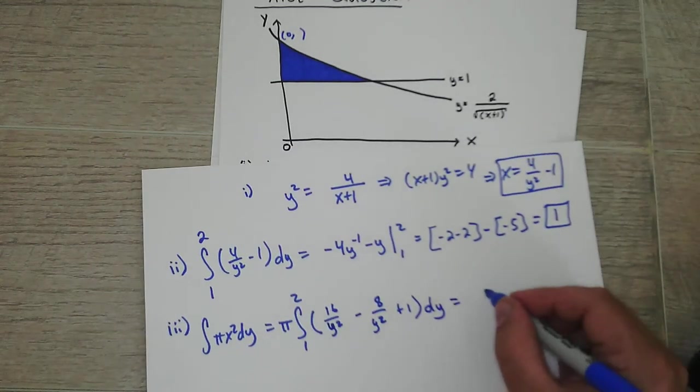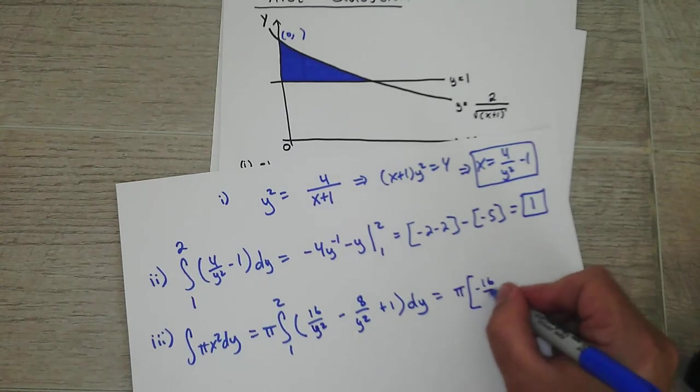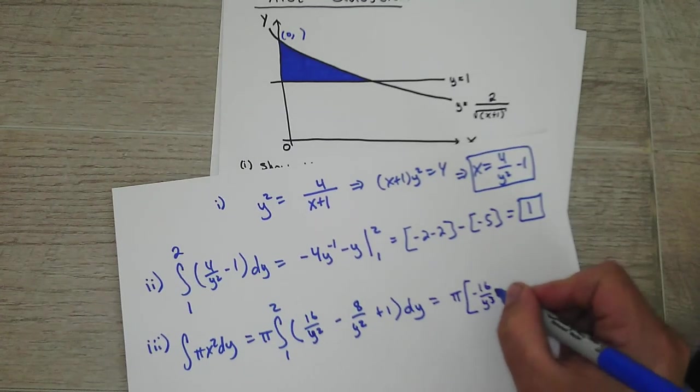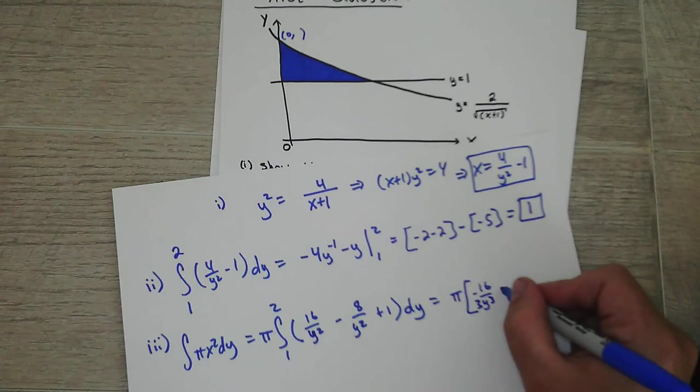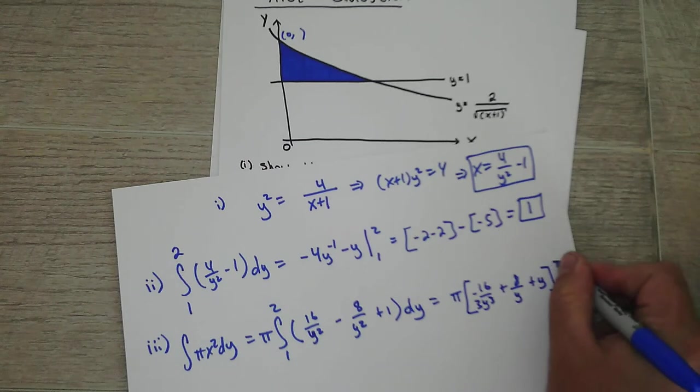Okay, if you integrate it correctly, let's see, it'll be negative 16y - or 3y cubed on the bottom - plus 8 over y, plus y. The value is from 1 to 2.